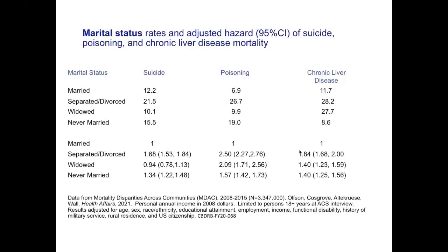Even after adjusting for education, employment, and other variables, the lowest income groups still have a significantly increased hazard of poisoning mortality relative to the highest income group, and lower and middle income adults have greater risk of chronic liver disease. Looking at marital status, adults who are separated or divorced have high crude mortality rates from all three causes of death. In adjusted analyses, the highest hazards are especially for poisoning deaths among separated and divorced people compared to married individuals. Almost all chronic liver disease deaths occur among people over 40, reflecting the slow-moving process of developing cirrhosis.